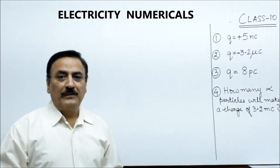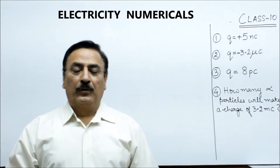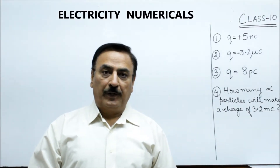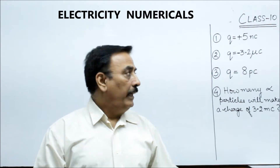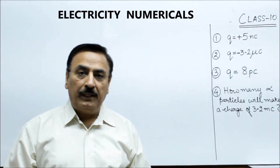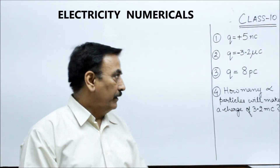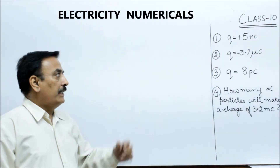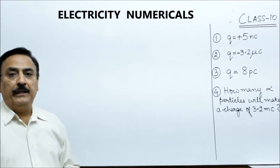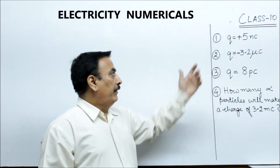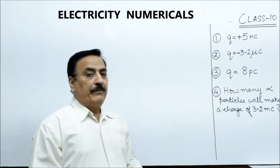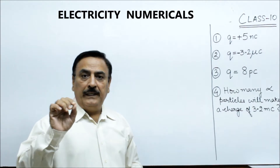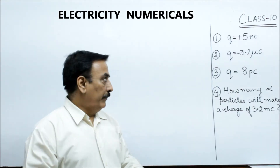Hello dear students, so today we are going to continue with the previous topic of Class 10 on quantization of charge, with some other numericals. The first question is: if you are given a charge of 5 nC, how many electronic charges will be made?